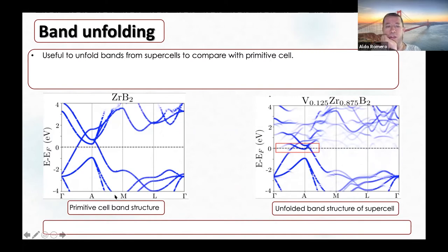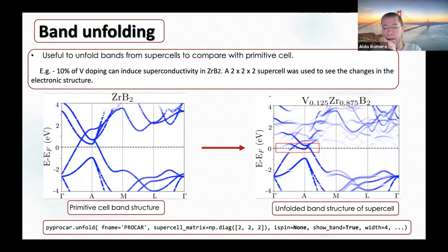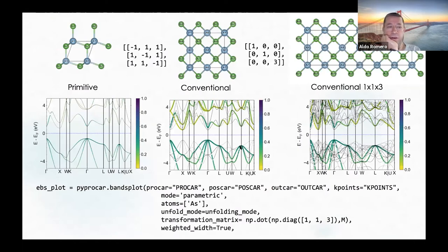When you have a specific case—for example, this is the primitive cell and then you also have the supercell—you can unfold the band structure and see what the different contributions of the different atoms are. For example, over here I have the primitive unit cell calculation, then I do the unfolding to compare the two, and I can also use the supercell to compare with everything else.